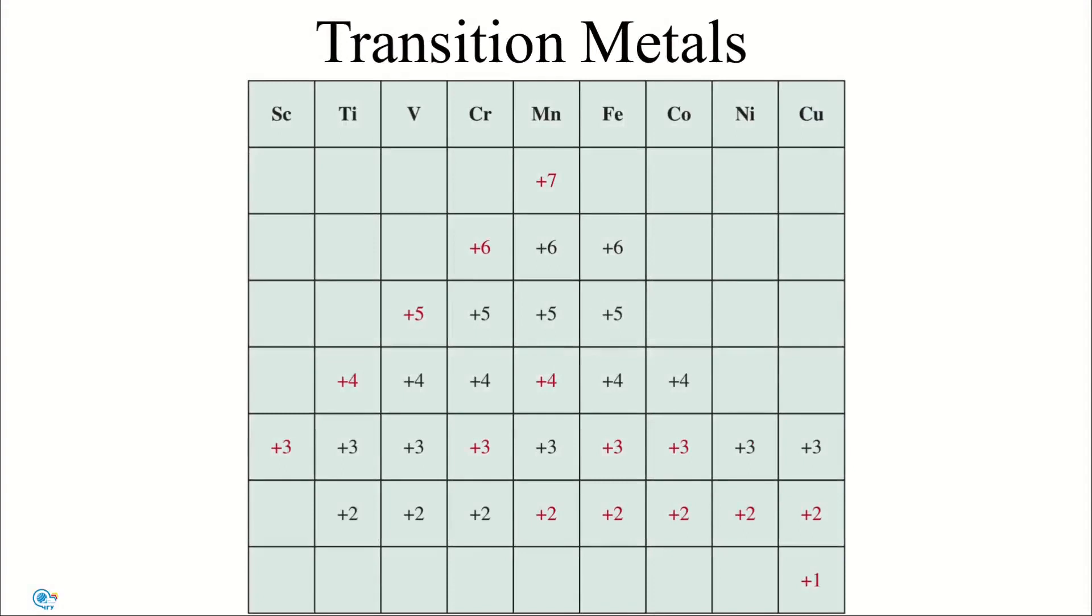The highest oxidation state for transition metals is +7 for manganese. For elements to the right of manganese, oxidation numbers are lower.